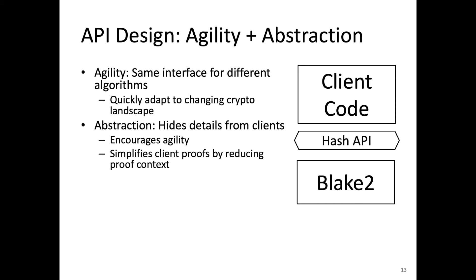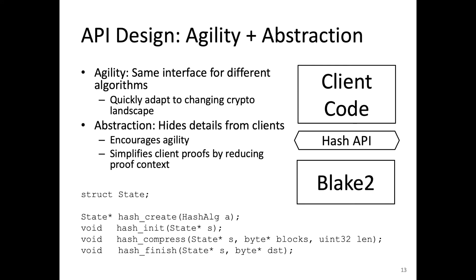After all, the implementation and proof of correctness for an application like a Merkle tree should not depend on such details. Concretely, our generated C API for hashing looks something like this. The client sees an abstract state type but not its internal representation. The client can choose which algorithm to use when creating the state, but from then on, the exact same API — to initialize, compress, and finalize the hash — is used regardless of the algorithmic choice. As a result, migrating to a new hash algorithm only requires a one-line change in the call to hash create.